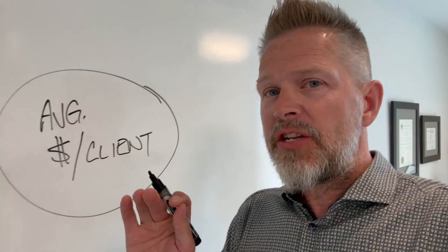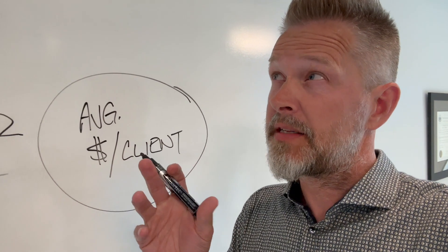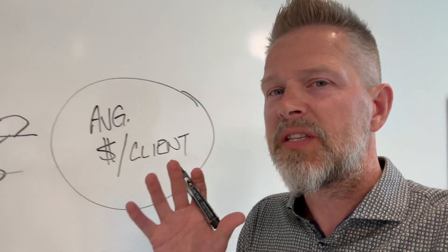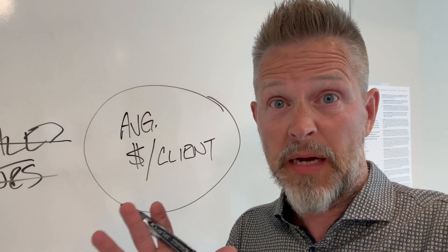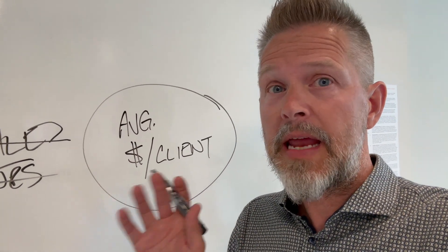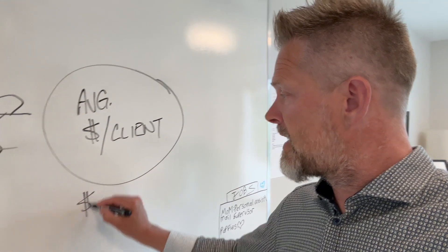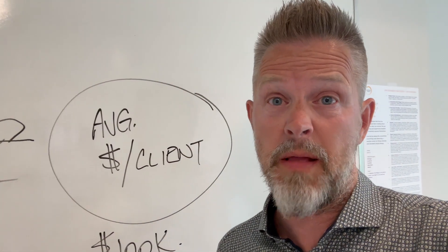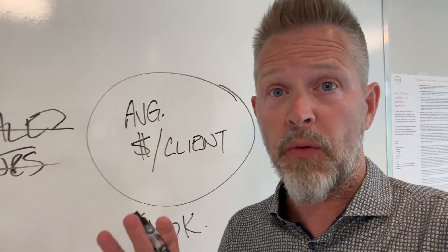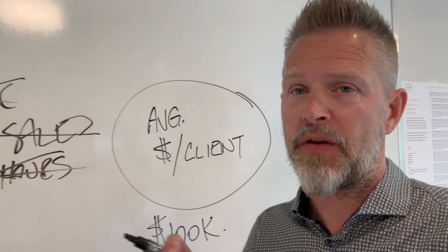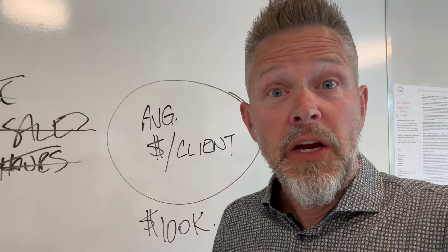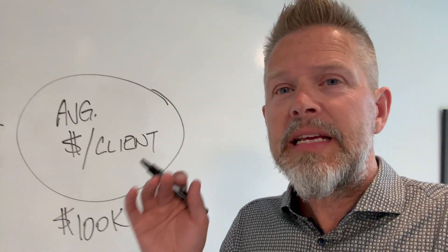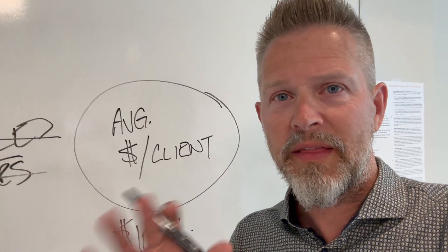Literally, looking at one of the firms we reviewed today — we changed the average price per client by some silly number, like 50 bucks average. That increased their bottom line net income by a hundred thousand dollars. $50 a month — and I'm talking about a subscription-based model. So $50 a month is of course $600 a year, but we're talking average price per client per month. It is insane what this does.